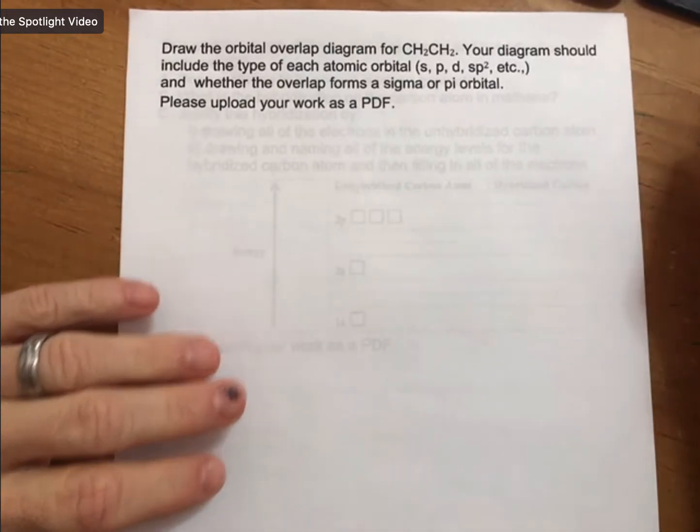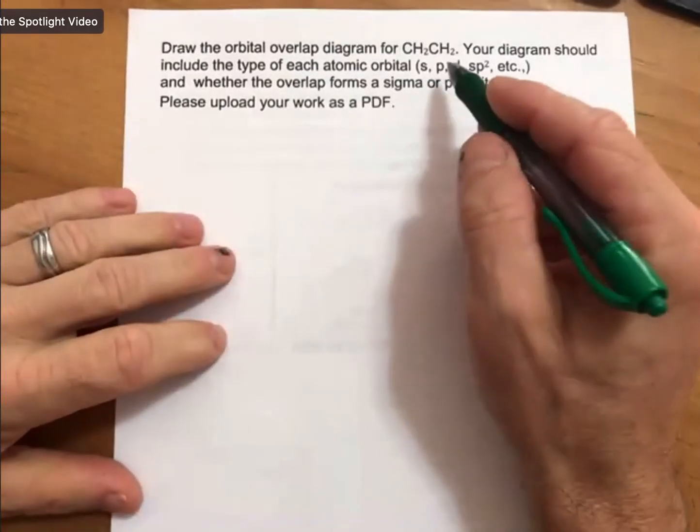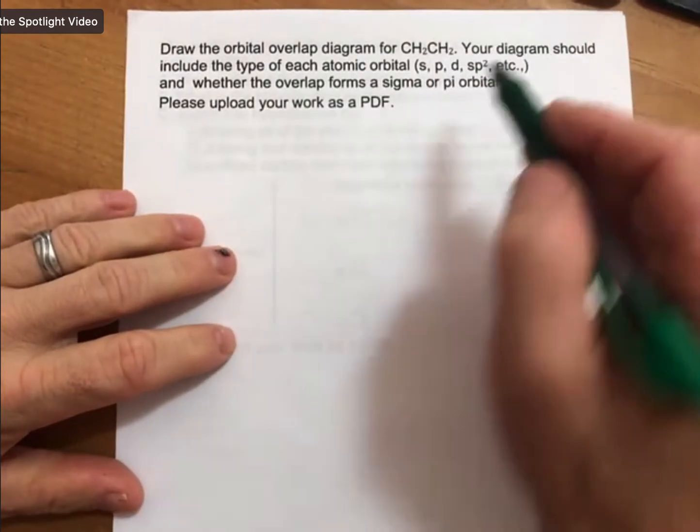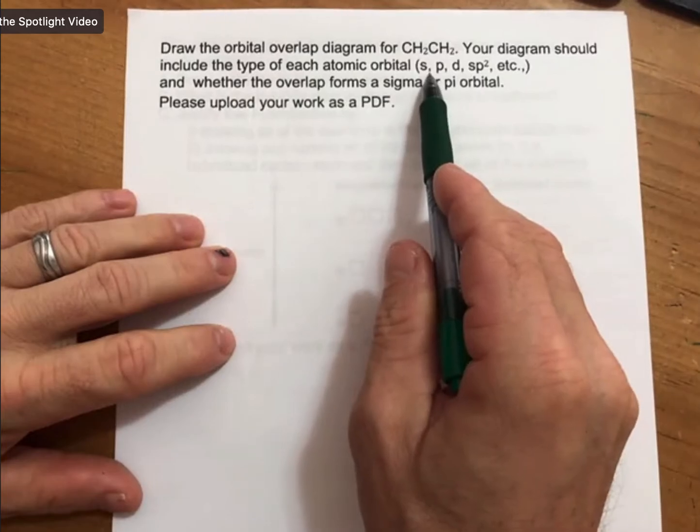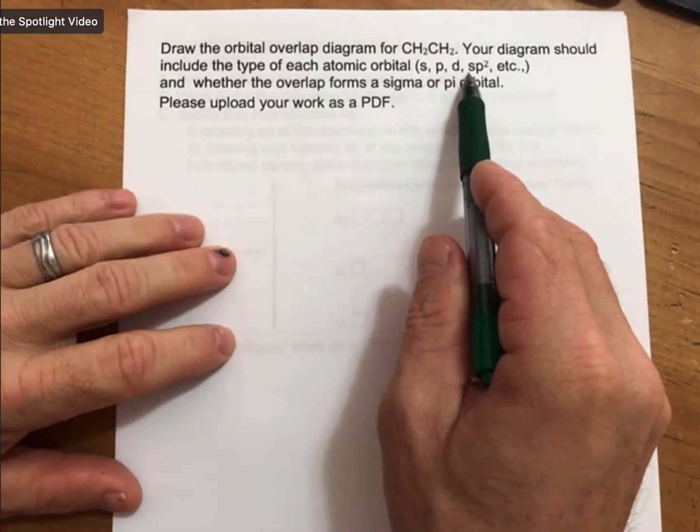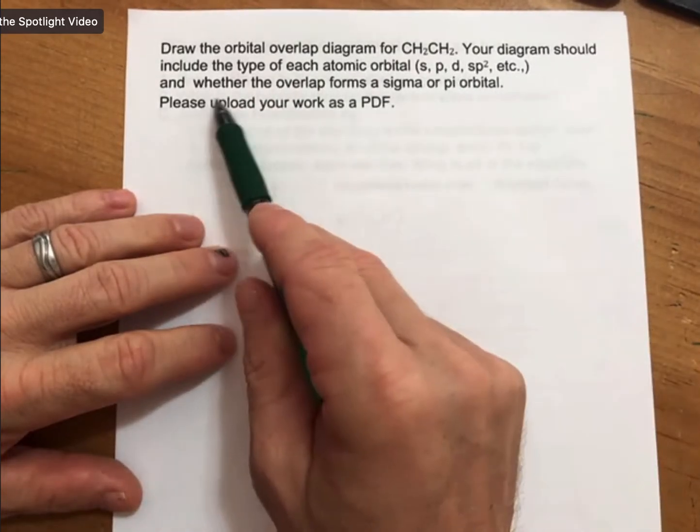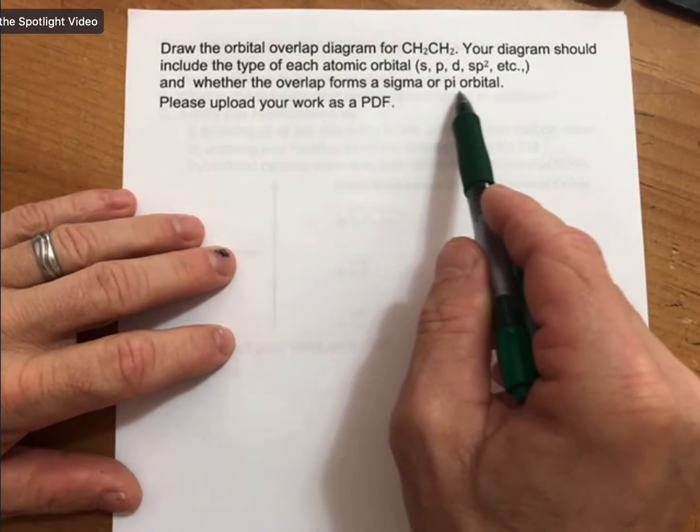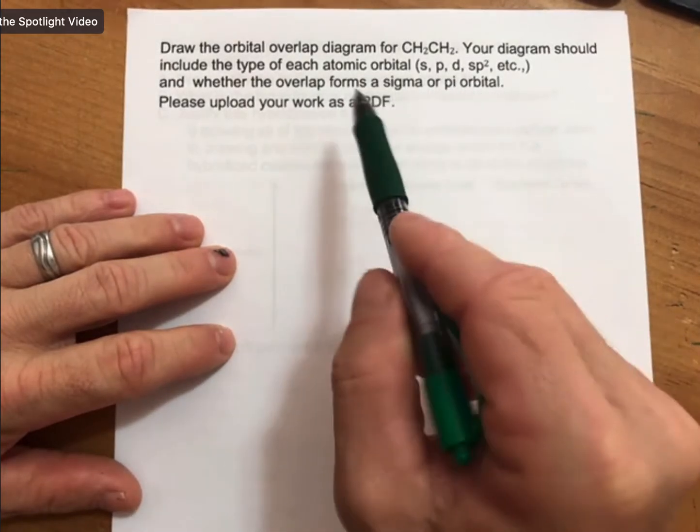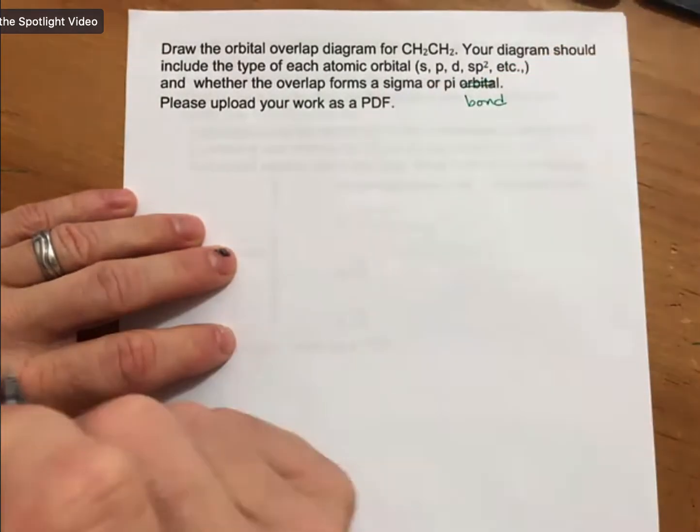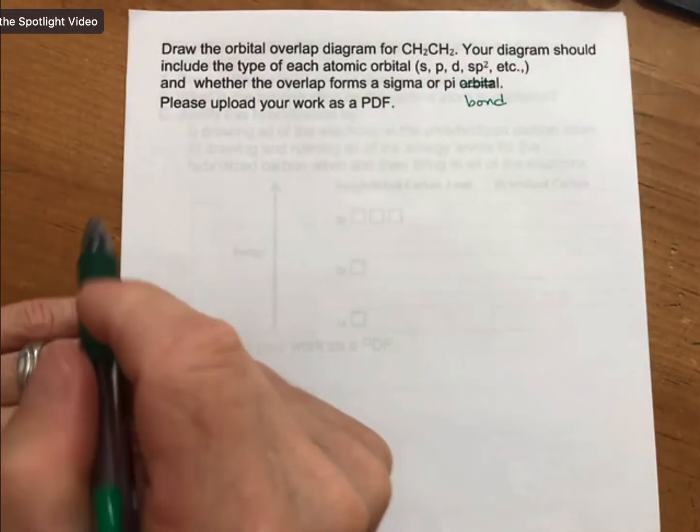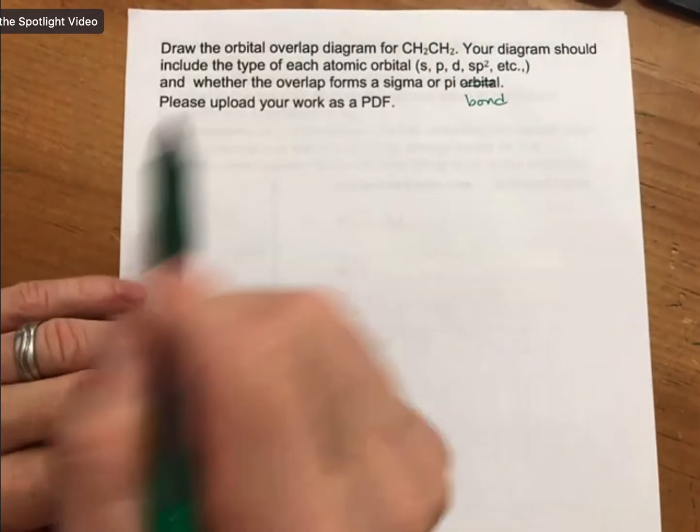This is going to be an orbital overlap diagram for CH2CH2, and your diagram should include the type of each atomic orbital, SPD, SP2, etc., and whether the overlap forms a sigma or pi orbital, or I think the proper word would be bond there. My apologies for that typo. Please upload your work as a PDF.